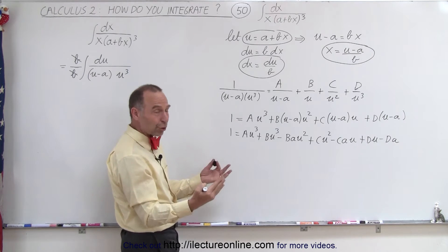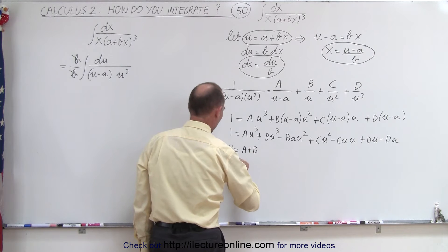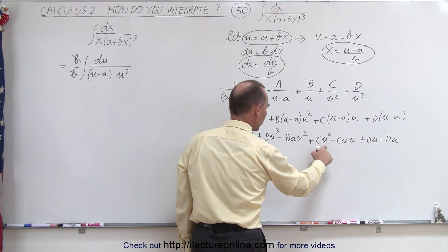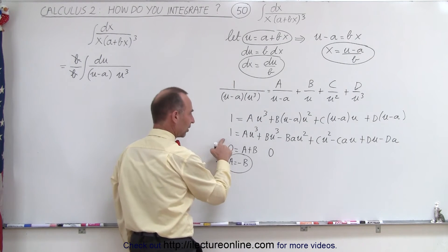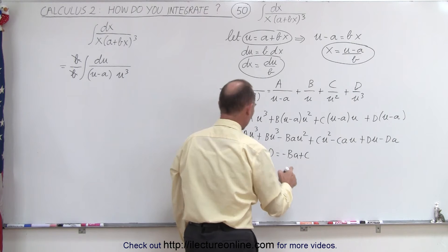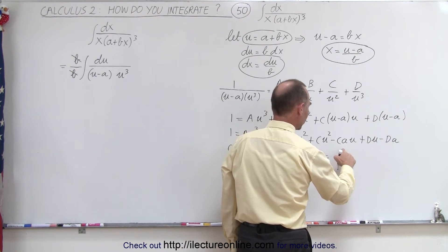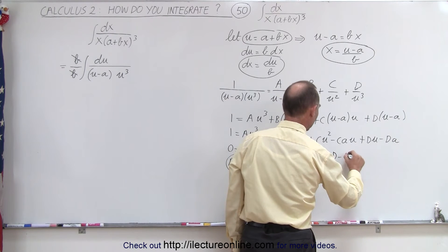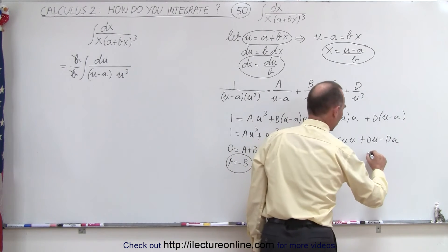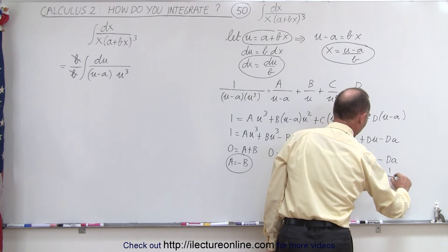Then to figure out what A, B, C, and D are, we multiply everything out to get: 1 equals A u cubed plus B u cubed minus BA u squared plus C u squared minus CA u plus D u minus DA. Notice on the left side we don't have any u cubed, so therefore 0 equals A plus B, or A equals negative B. We have no u squared terms on the left side, so 0 equals minus BA plus C. We don't have any u terms on the left side, so 0 equals D minus CA. And finally, we have a constant on the left side, so 1 equals minus DA, or D equals minus 1 over a.